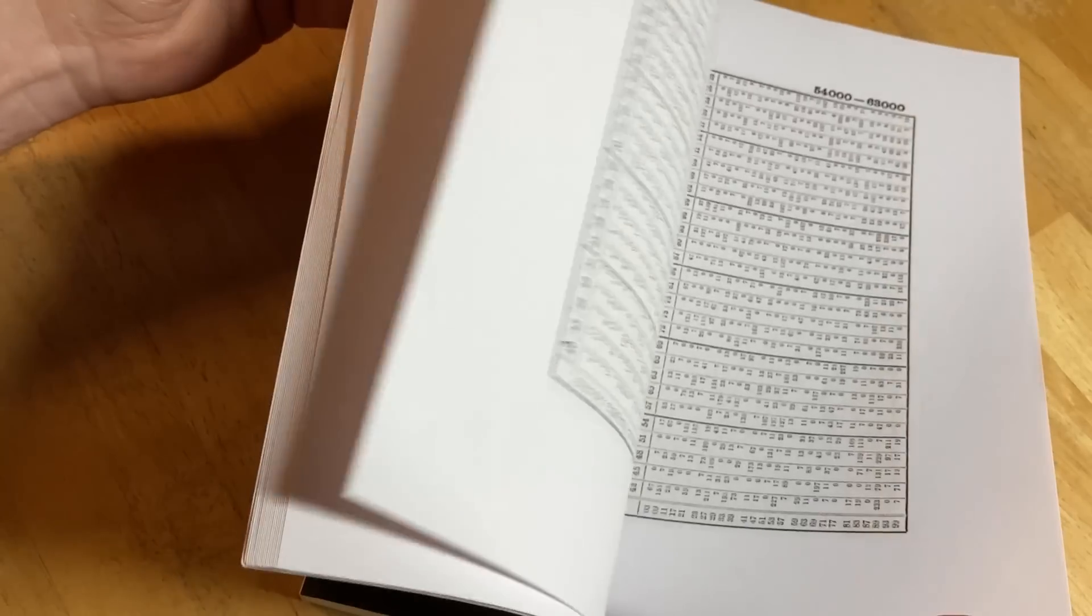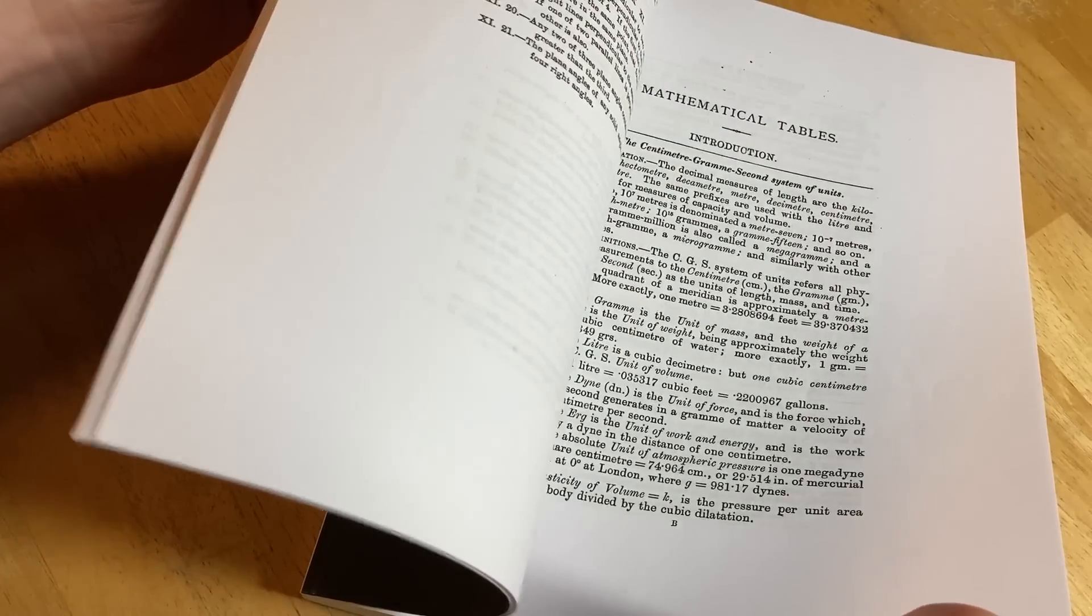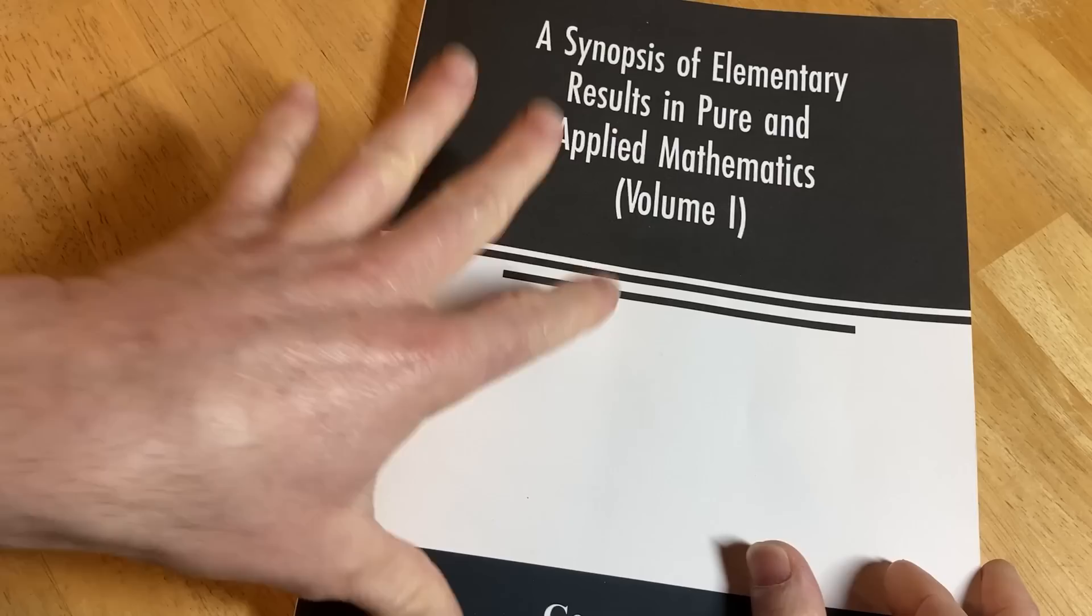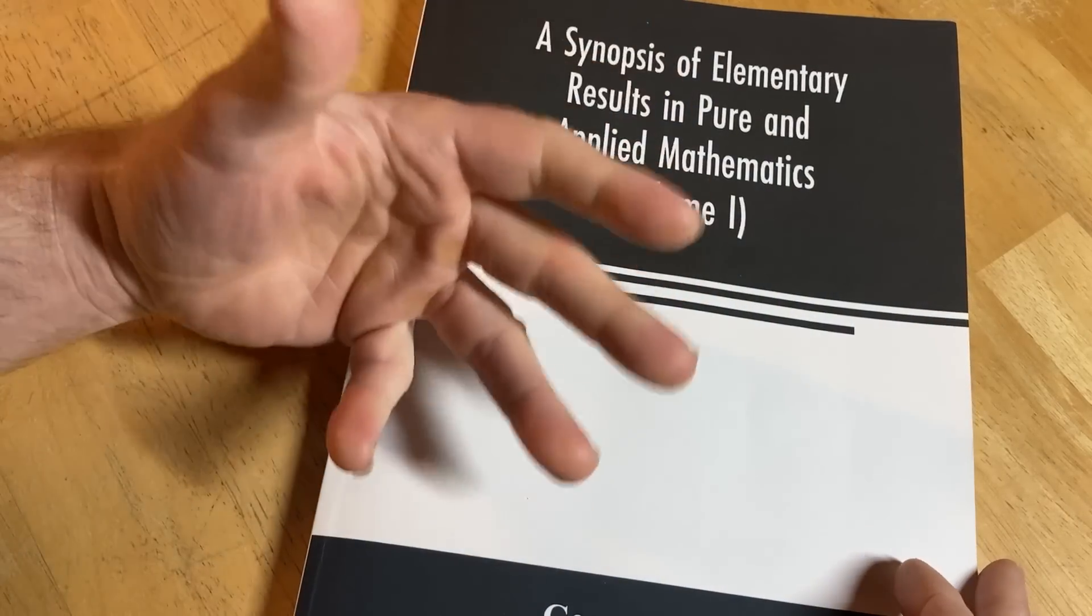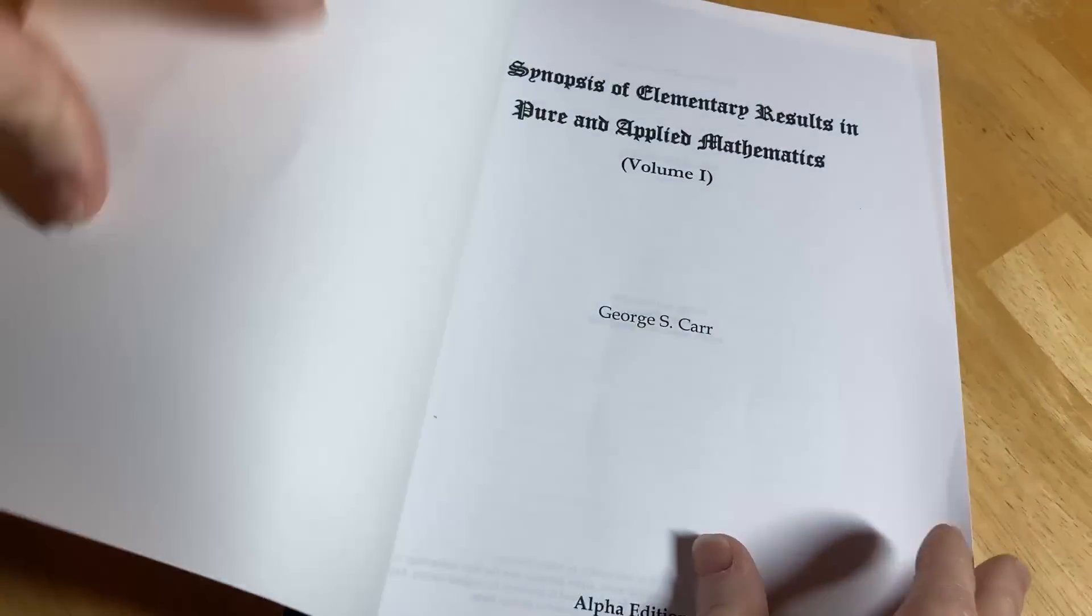Anyways, this book was lent to him when he was like, I think, 16. His friend had a library copy and let him borrow it, so let's take a look at it. It's available today. This is a reprint, obviously. This book is free. It's in the public domain, so you actually should be able to Google the book and find it.